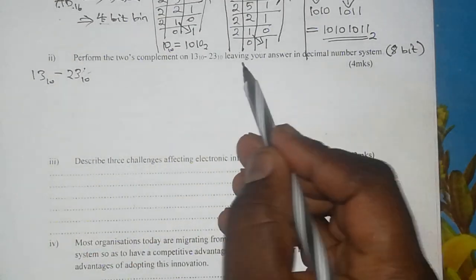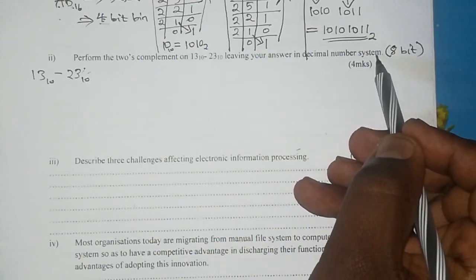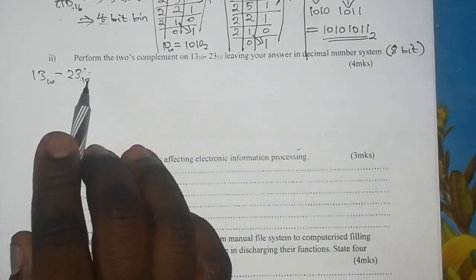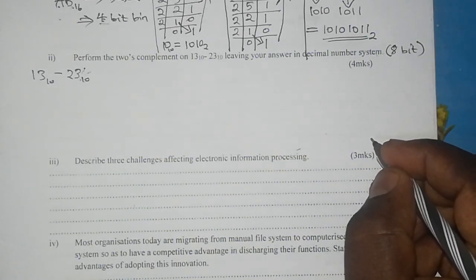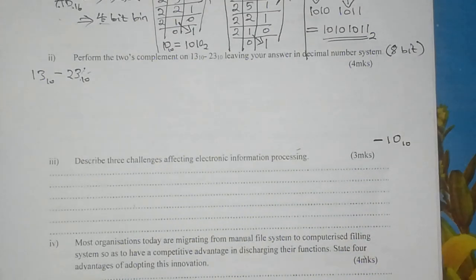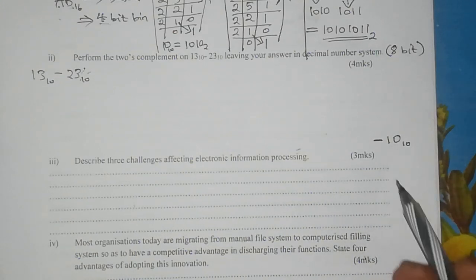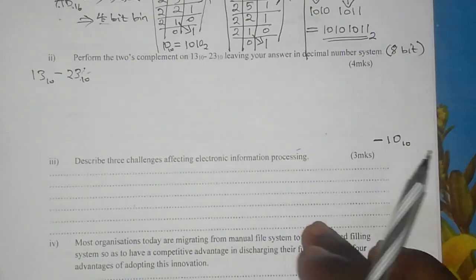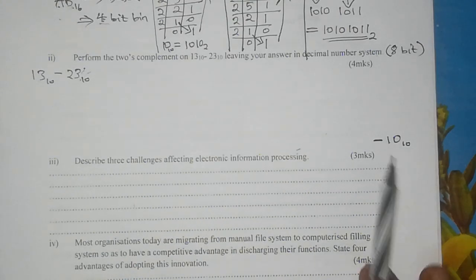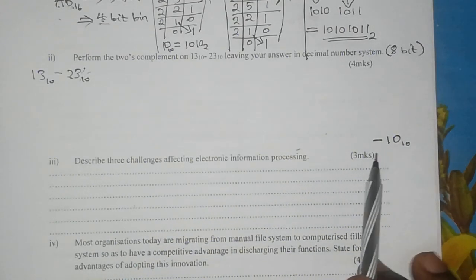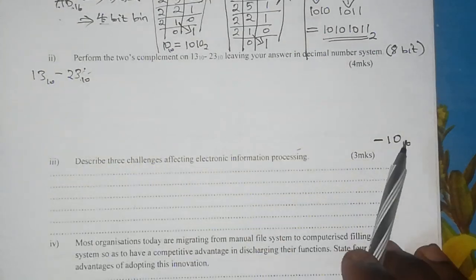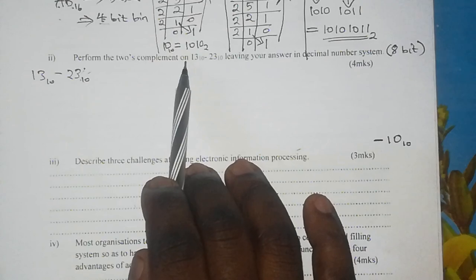Since the question asks us to leave our answer in the decimal number system — the same system in which the sum has been given — our result has to be negative 10 base 10. As a good candidate, that should be your answer at the end of it all. Whatever goes on in between is what we want to see so that we understand how to move from this sum to this result going through the two's complement system.